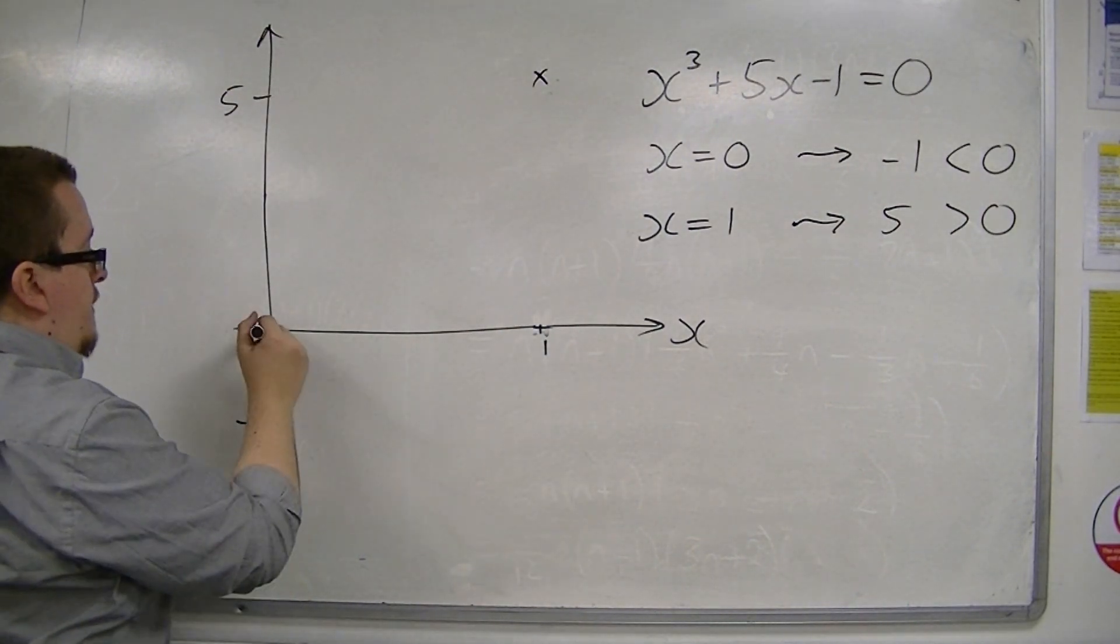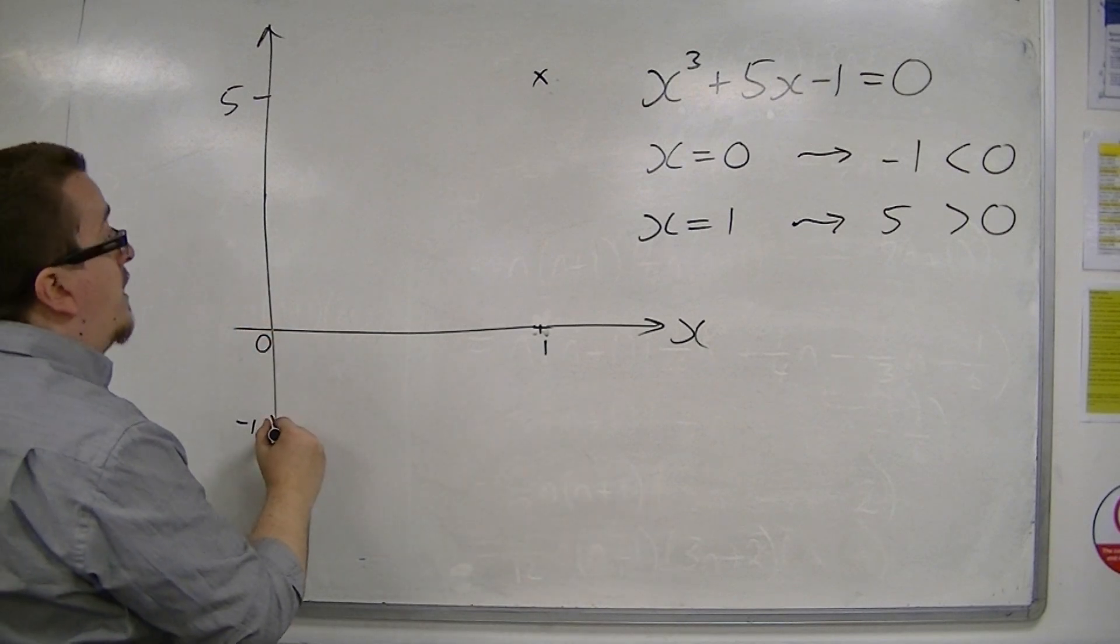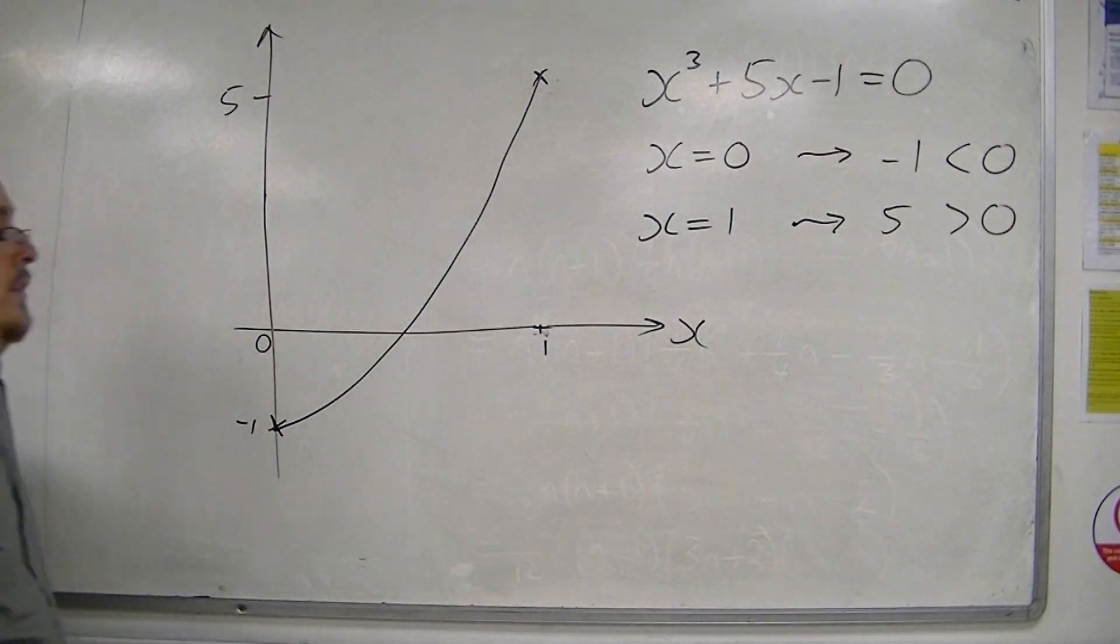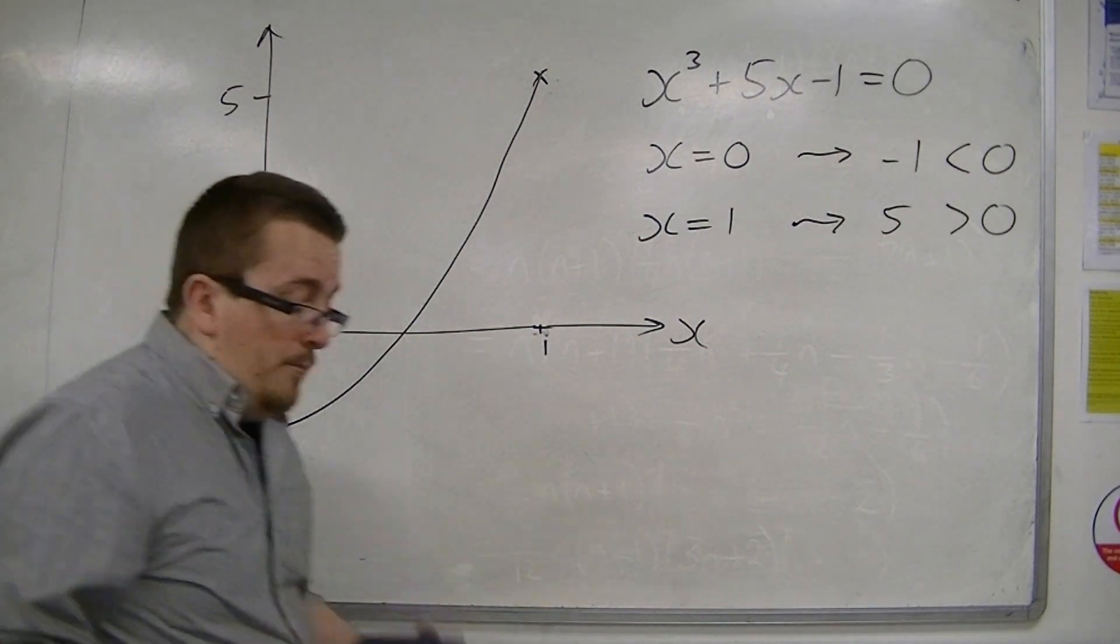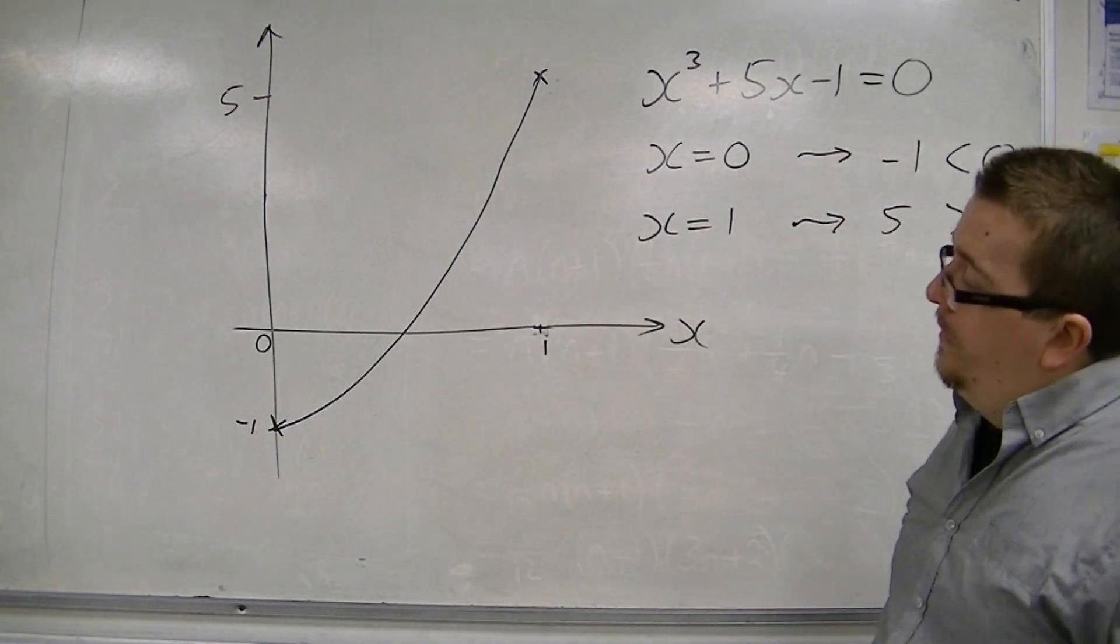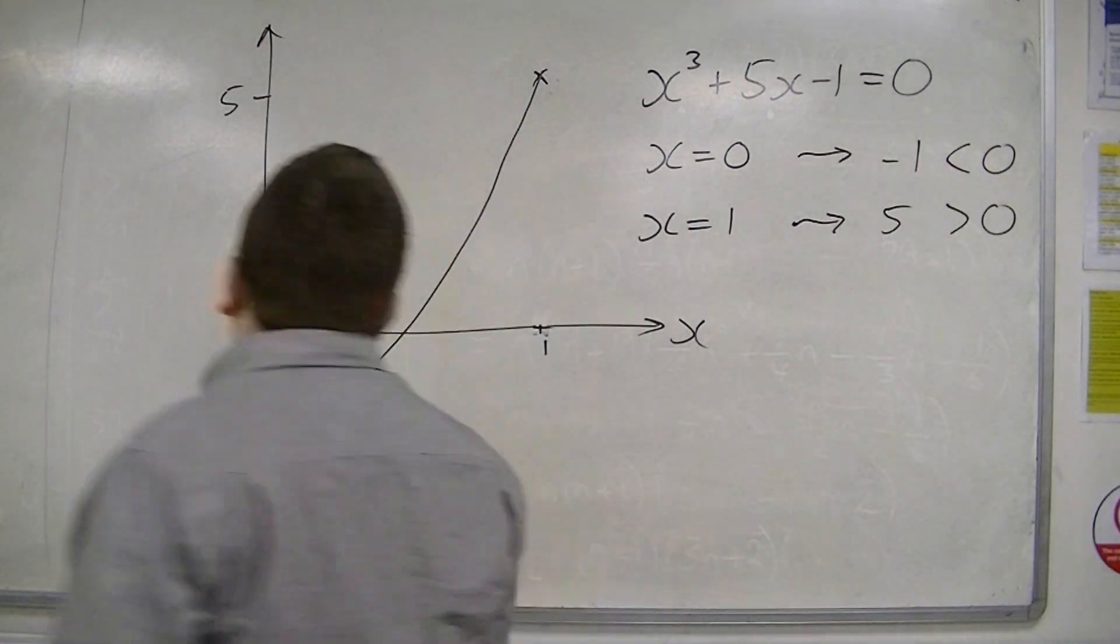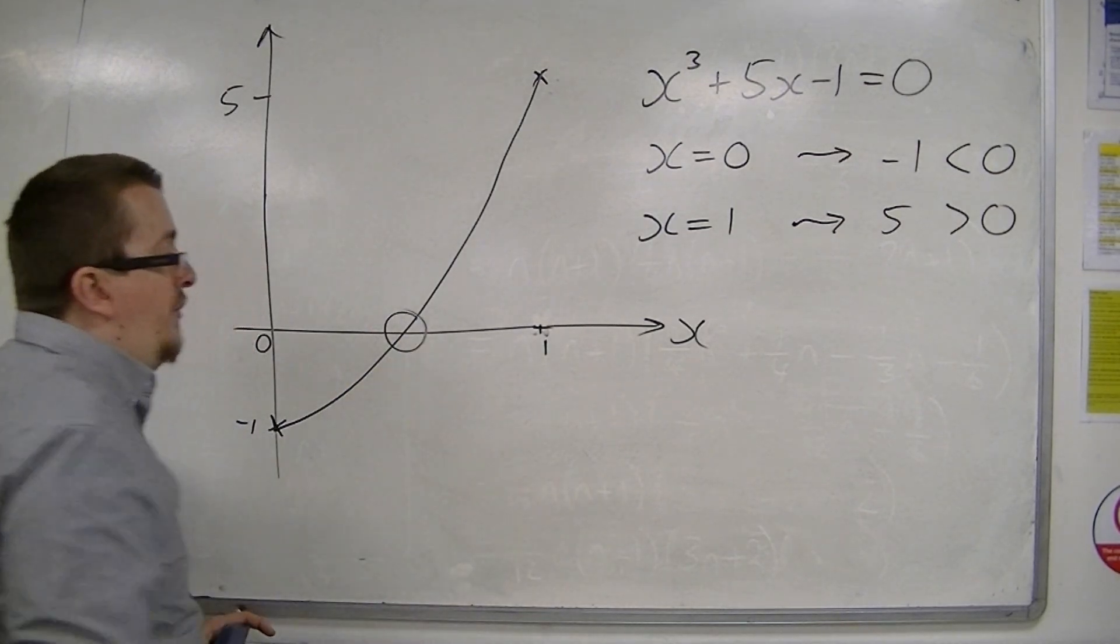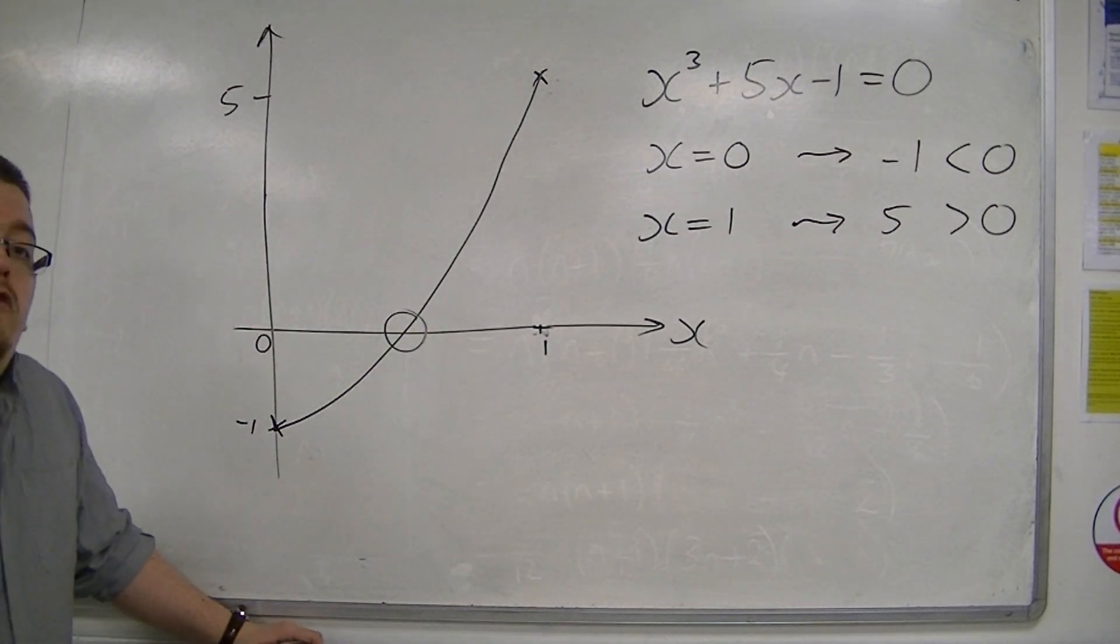So, between 0 and 1, the curve must cross the x-axis. At some point it must cross, because it goes from negative to positive. So, that would mean that there must be my solution somewhere between 0 and 1.